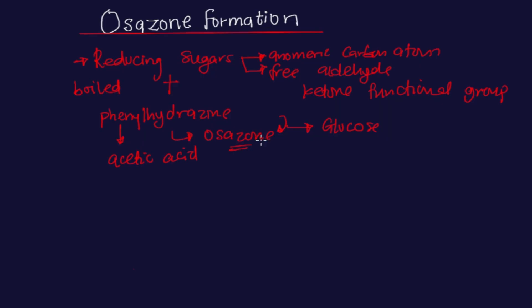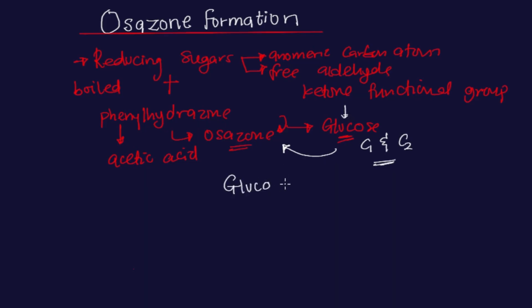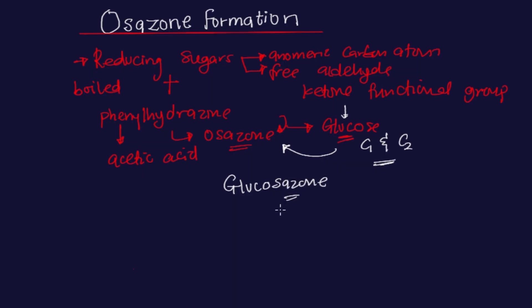Using glucose as an example, carbon number one and carbon number two of this reducing sugar are actually the ones that give rise to the formation of Osazone. So if I have any Osazone that is formed from glucose, I'm going to call it glucosazone — that's going to be the name because it is formed from glucose.